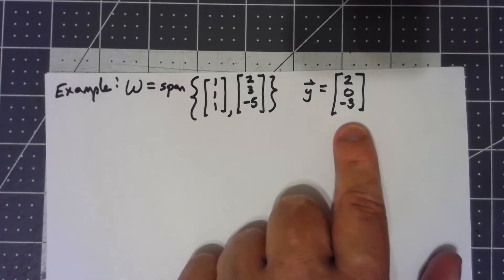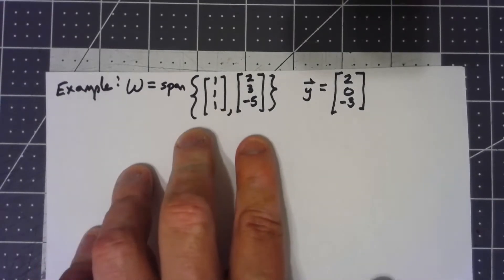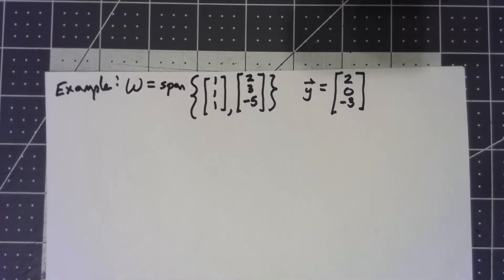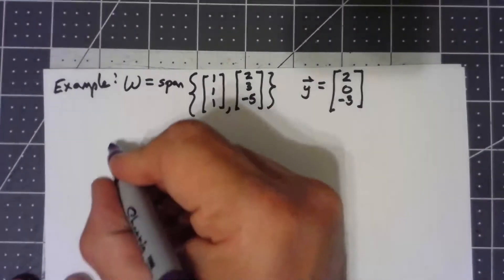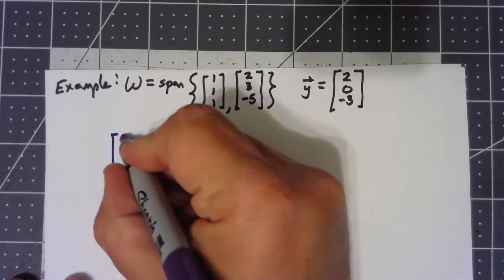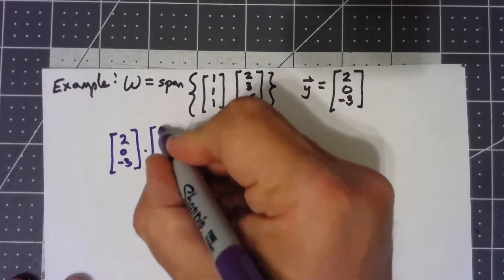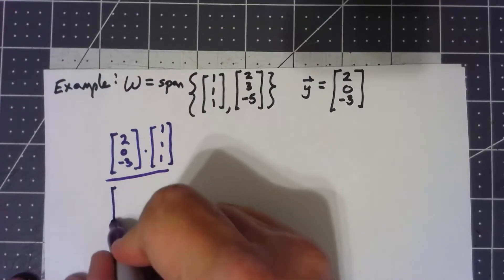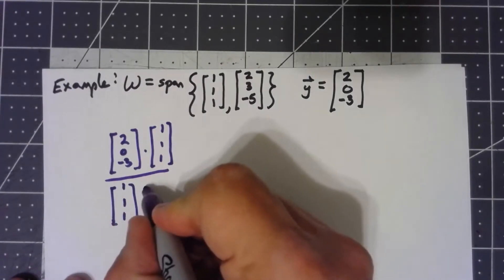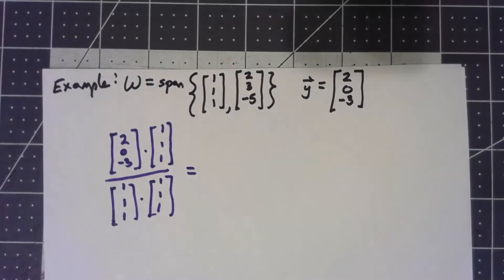So I want to go ahead and take this (2, 0, -3) and write it as something that's in w plus something that's in w perpendicular. So the way I'm going to do that, I'm going to take the dot product of the vector I'm looking for, the (2, 0, -3), and I'm dotting it with each of my basis vectors. But more than that, I'm then dividing by the norm of that basis vector squared, or just taking the dot product of that vector with itself.